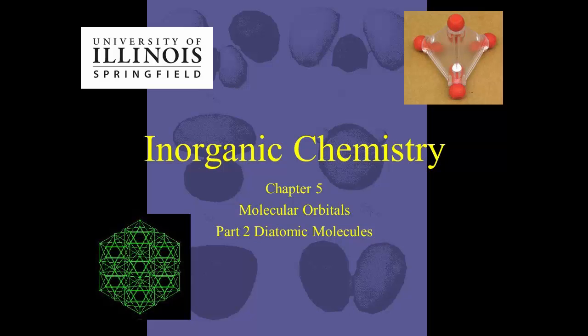Welcome back to Inorganic Chemistry. In our prior lecture, we learned about orbital potential energies to help us make molecular orbitals. In this lecture, we'll learn about hybridization and complete the molecular orbital energy level diagram for carbon monoxide.